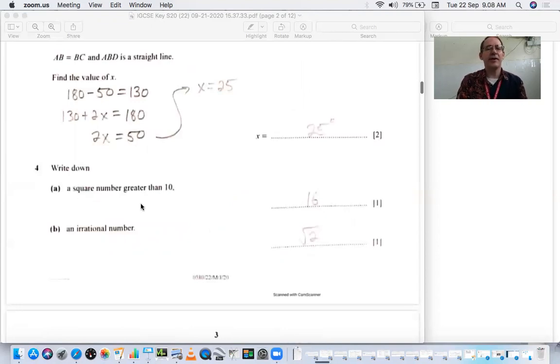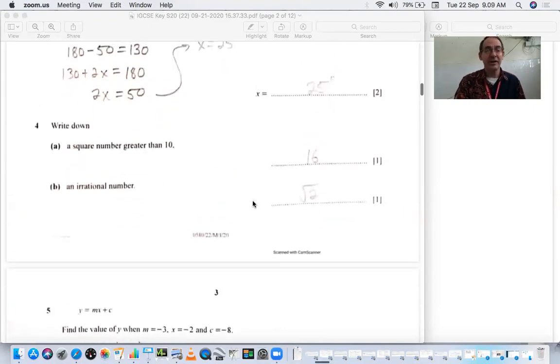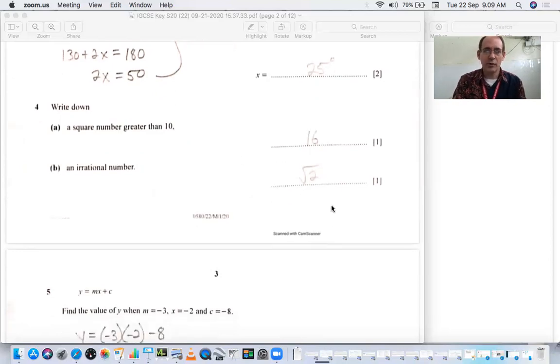Now just write down a square number greater than 10. Your 3 squared is 9, so anything above 3 squared. I just put 4 squared for 16. It could be 5 squared 25, 36, 49, as long as you have something greater than 10.